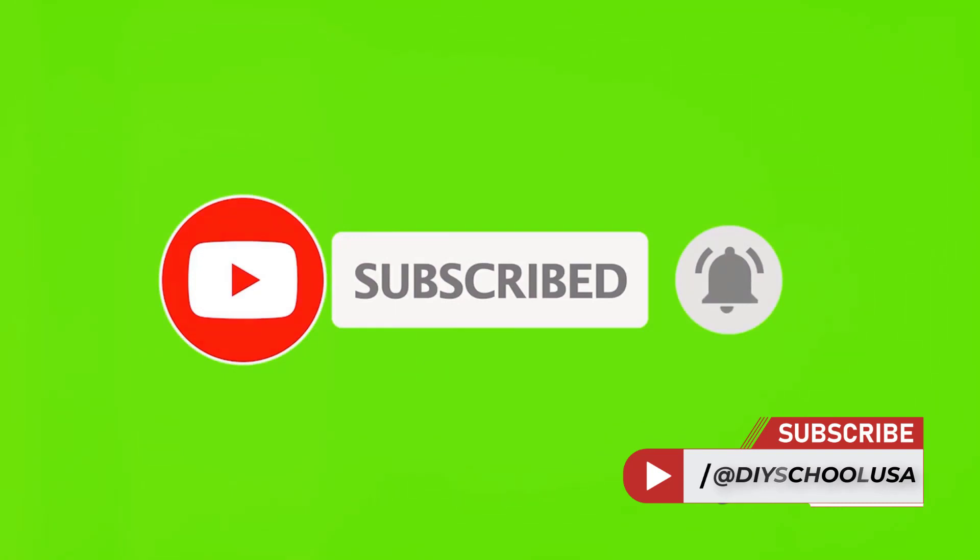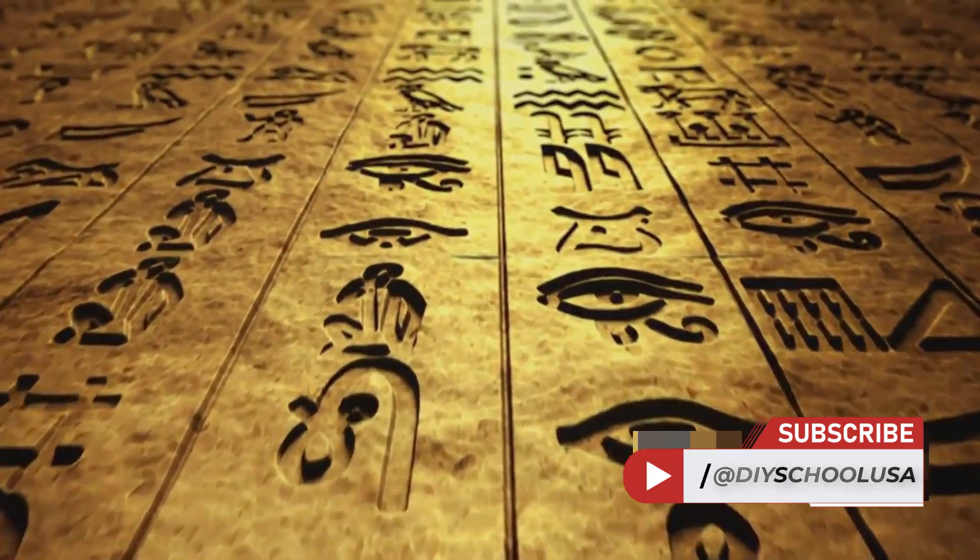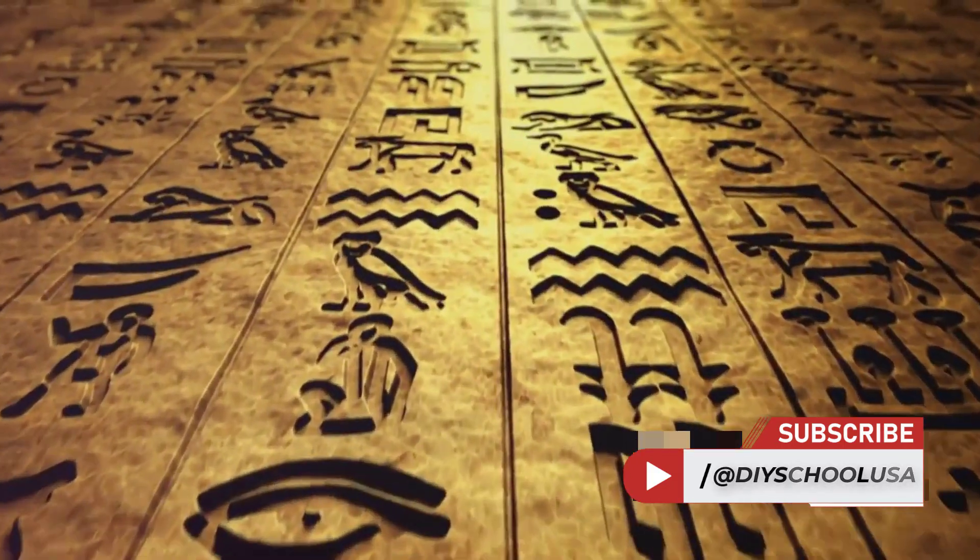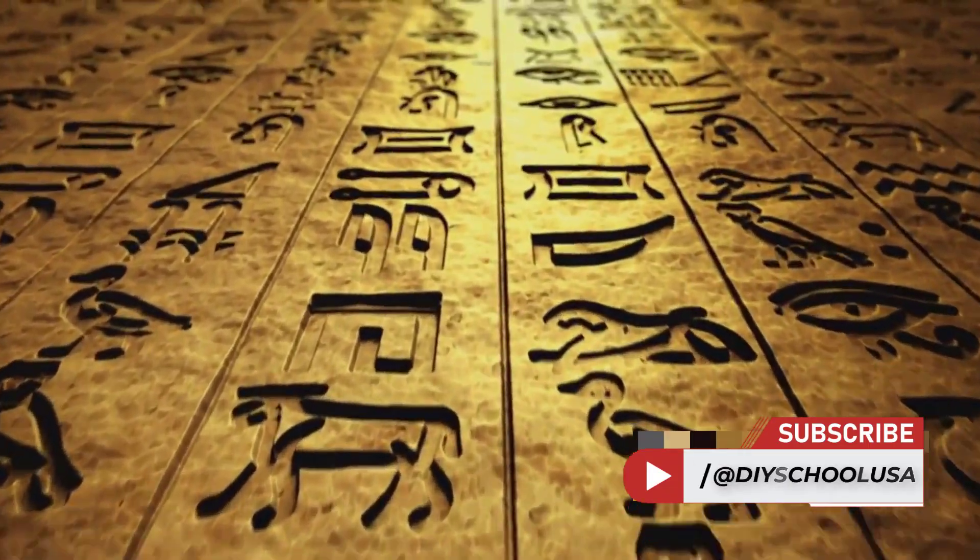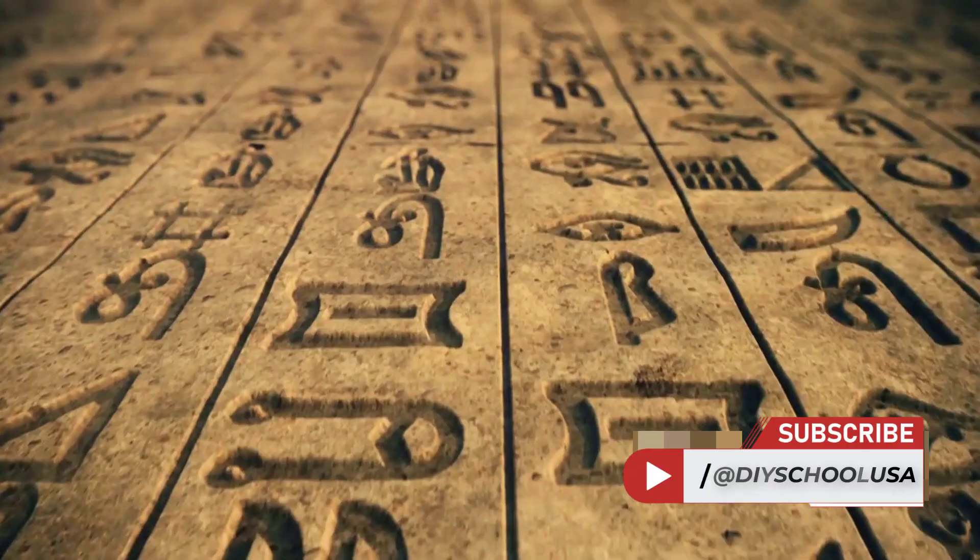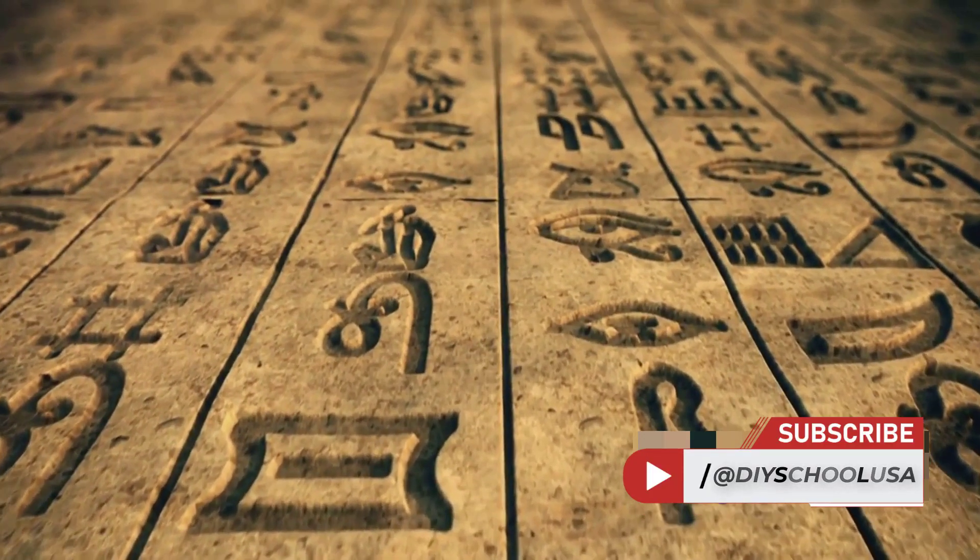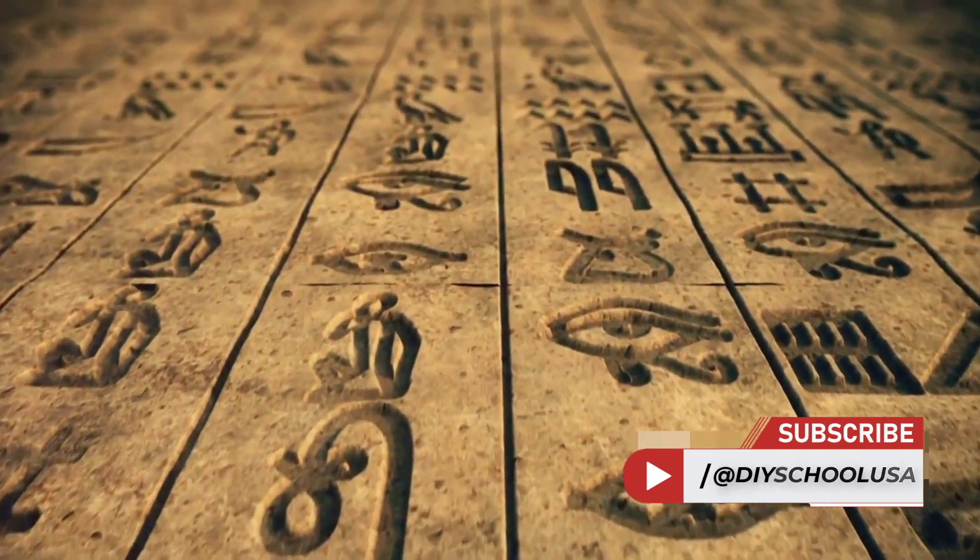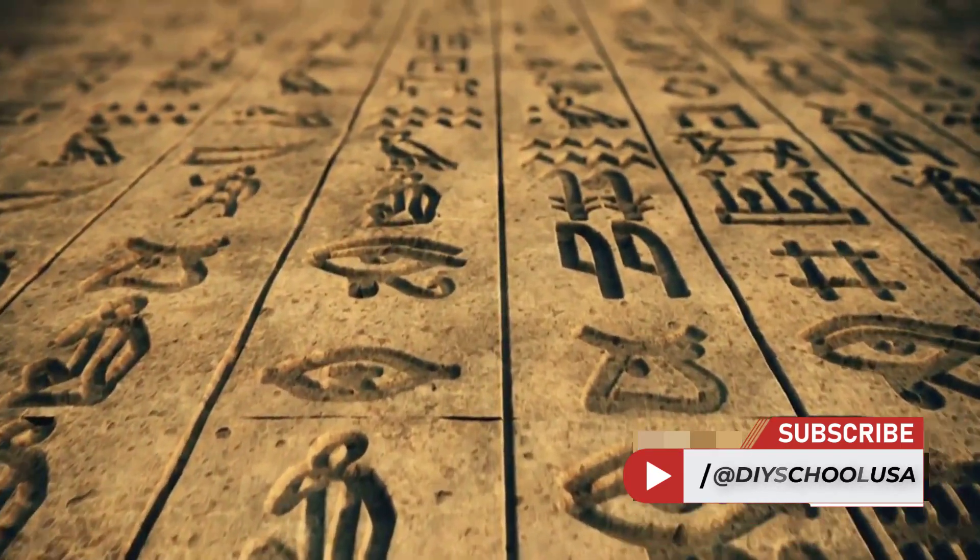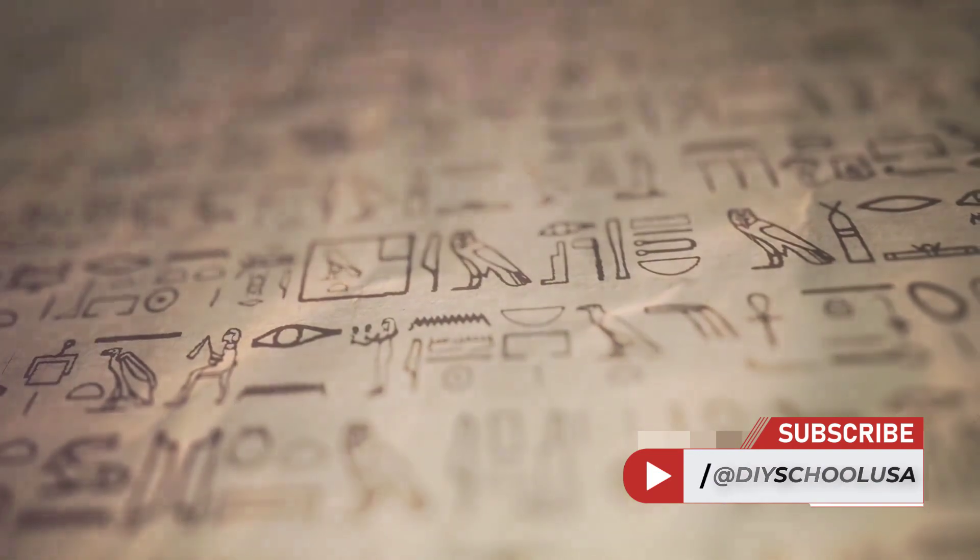This ancient civilization, flourishing from 1800 to 1600 BC, developed a unique and revolutionary system of mathematics based on the number 60. Let's take a journey into the heart of this system. Unlike our familiar base 10 system, the Babylonians utilized a base 60 or sexagesimal system.